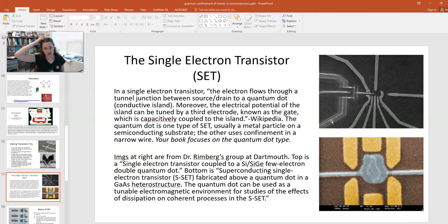So a single electron transistor, in this kind of transistor, the electron flows through a tunnel junction between the source and the drain, and the one that's talked about in your textbook is a quantum dot type single electron transistor. And so you have your source drain and in the middle of those, you have a quantum dot, which is a little conductive island.